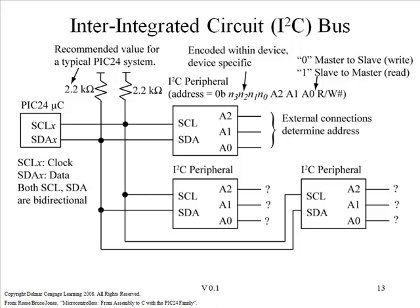Now that we've covered the electrical specifications of the I2C bus, let's turn to the protocol specification — in other words, what sequence of messages on the bus allows us to move data back and forth. The most important feature, and the thing that actually allows unique address assignment for each element on the bus, is an address: an 8-bit value sent at the beginning of each I2C transaction.